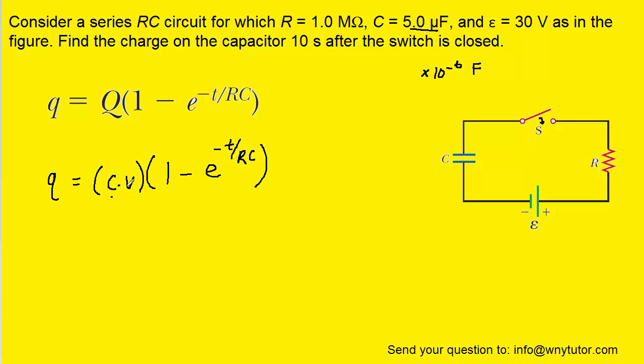The potential produced by the battery was given to us as 30 volts, and that's already in a standard unit. The time was given to us in the standard unit of 10 seconds. The resistance is this 1 megaohm. Notice that mega means we have to multiply by 10 to the 6 so that we get it into the standard unit of ohms. And then the capacitance was given to us in microfarads, and again, that just needs to be multiplied by 10 to the minus 6.